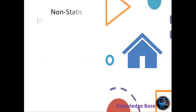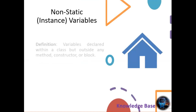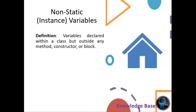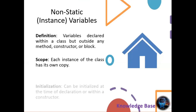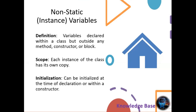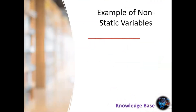Lastly, we have non-static or instance variables. These are declared within a class but outside any methods, constructor, or block. Each instance of the class has its own copy of these variables. They are initialized either at the time of declaration or within a constructor. Instance variables represent the attributes of an object.